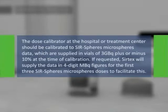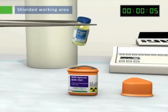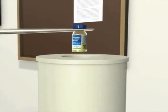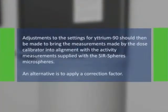If requested, SIRTEX will supply the data in 4-digit Megabecquerel figures for the first 3 SIRSPHERES Microspheres doses to facilitate this. Allowing for decay, compare the activity measurements from the dose calibrator with the activity measurements supplied by SIRTEX with the SIRSPHERES Microspheres. Adjustments to the settings for Yttrium-90 should then be made to bring the measurements made by the dose calibrator into alignment with the activity measurements supplied with the SIRSPHERES Microspheres.